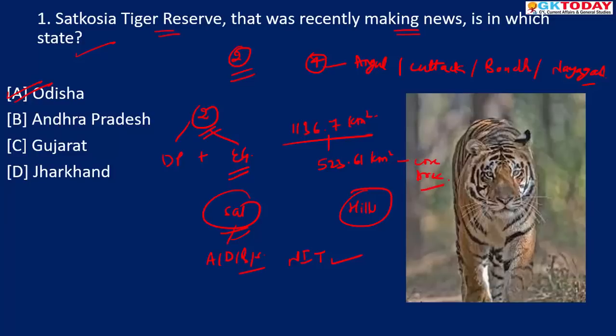The reserve is home to a variety of wildlife including tigers, leopards, spotted deer, barking deer, bison, wild dogs, sloth bear, jackal, etc. It also provides a natural habitat for two endangered species: freshwater crocodile and gharial. Simply remember that Satkosia Tiger Reserve lies in the state of Odisha.